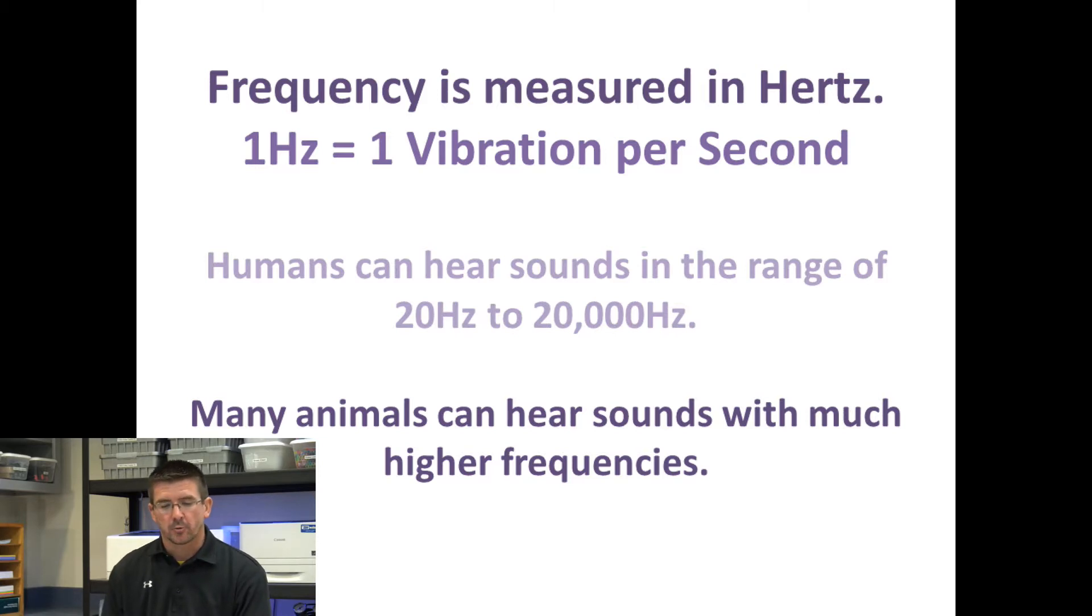Now humans can actually hear a range of sounds anywhere from around 20 hertz, or 20 vibrations per second, all the way up to 20,000 hertz, or 20,000 vibrations per second. Of course, many animals can actually hear much higher frequencies than that. Dogs hear much higher frequency than humans, and lots of other animals. Some animals can hear lower frequencies, but the human range is between 20 and 20,000 hertz on average.